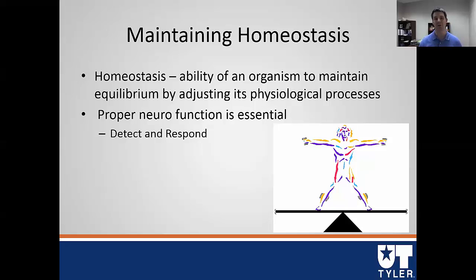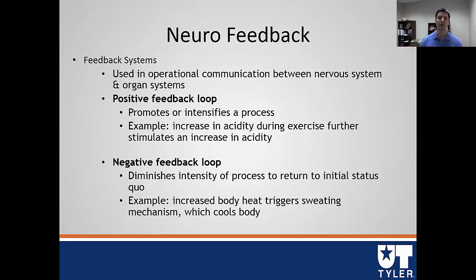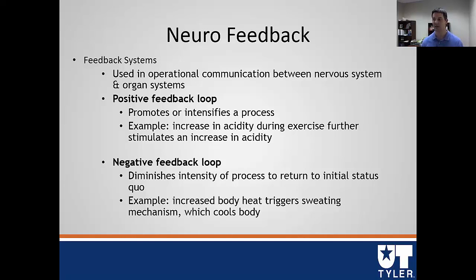The best way that homeostasis is maintained is by having good feedback systems. Neurofeedback is the idea that there is some type of communication between the nervous system and the organ system, such that if any change in the environment offsets homeostasis, we respond in a certain way to counteract that. We have two different types: a positive feedback loop and a negative feedback loop. I'll start with the negative feedback loop, because this is the kind most commonly seen in all of physiology.